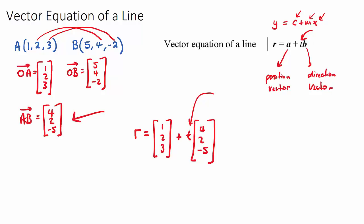If I substitute any value for t — for example, t = 2 — we get 1 + 2(4), 2 + 2(2), 3 + 2(-5), and that gives us the point on the line when t = 2. It's the same as in coordinate geometry: if you sub in an x value, you find a y value and get a point. Here, subbing in a value for t tells you where you are in space on the vector equation of a line.